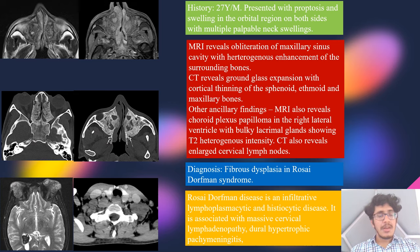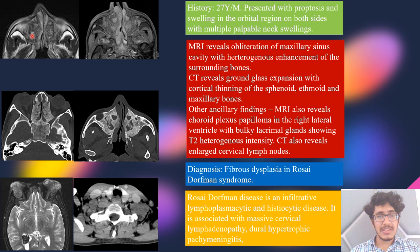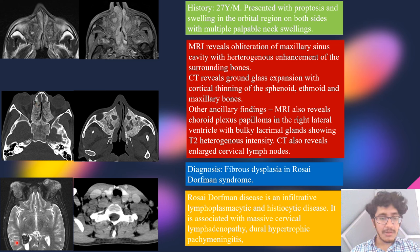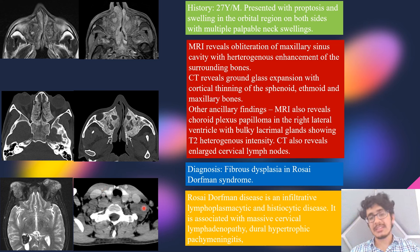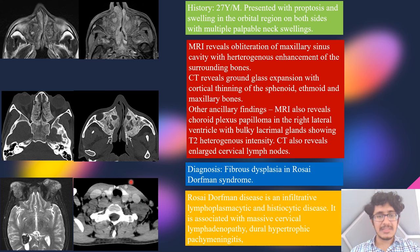A known case of Rosai-Dorfman disease: a 27-year-old man presenting with proptosis, swelling in the orbit, multiple facial bone and neck swellings. MRI revealed obliteration of the medullary sinus cavity with heterogeneous enhancement in the medullary bone of the sphenoid and ethmoid. CT showed ground-glass expansion of the medullary cavity with cortical thinning. Ancillary findings included choroid plexus enlargement, T2 hyperintensity of the lacrimal gland, and multiple enlarged cervical lymph nodes. The teaching point: in Rosai-Dorfman disease, such bony lesions are associated with fibrous dysplasia.